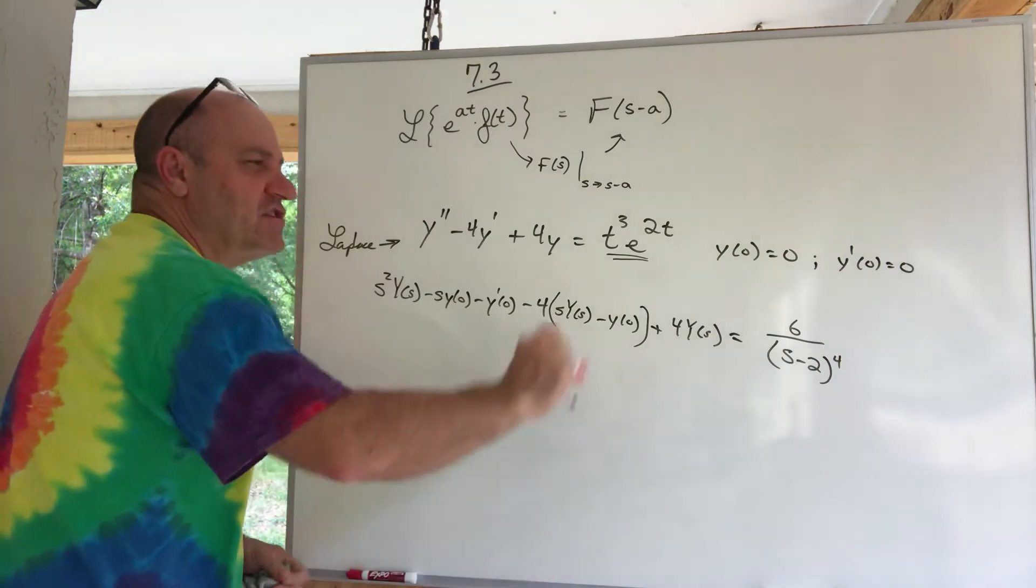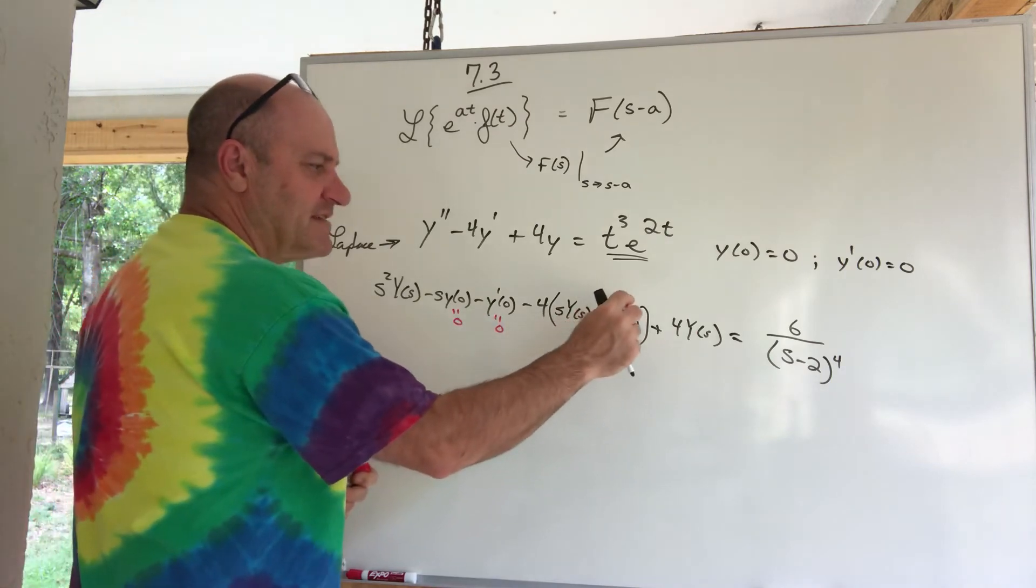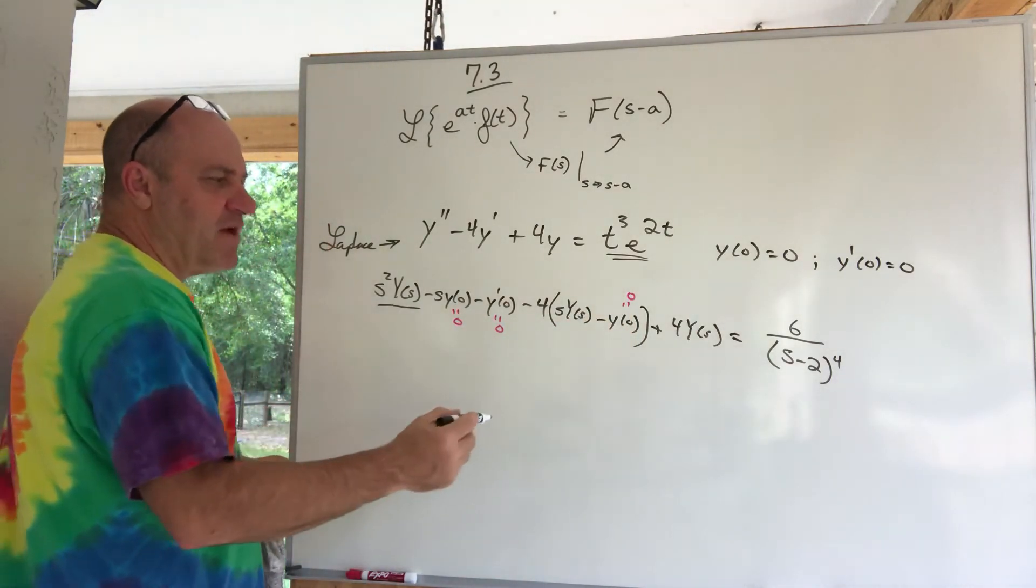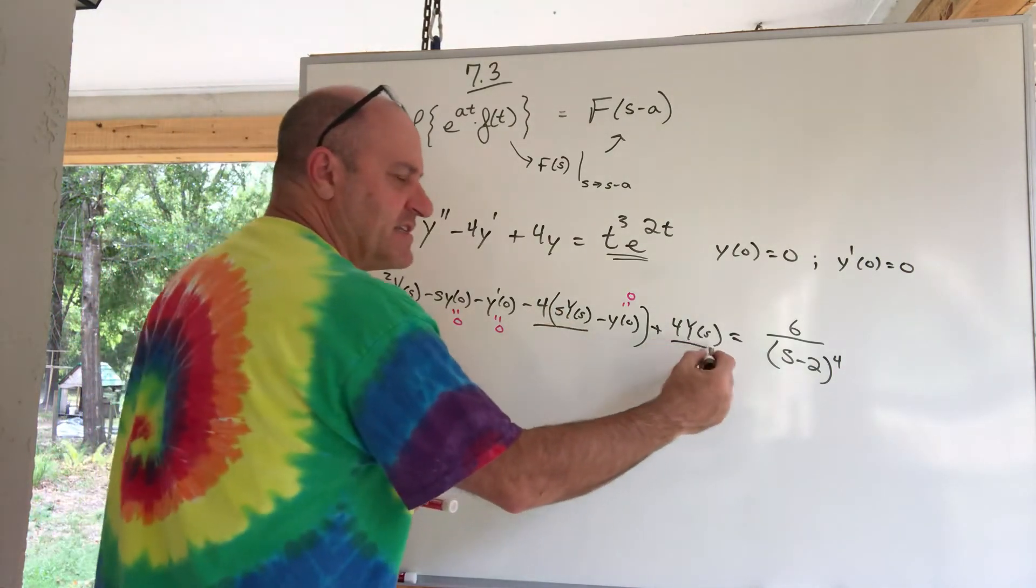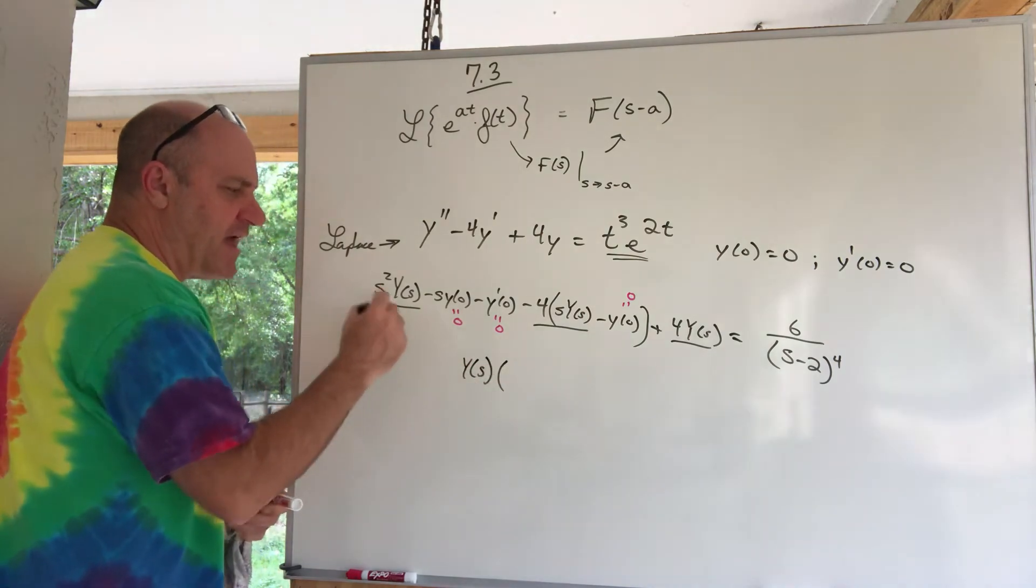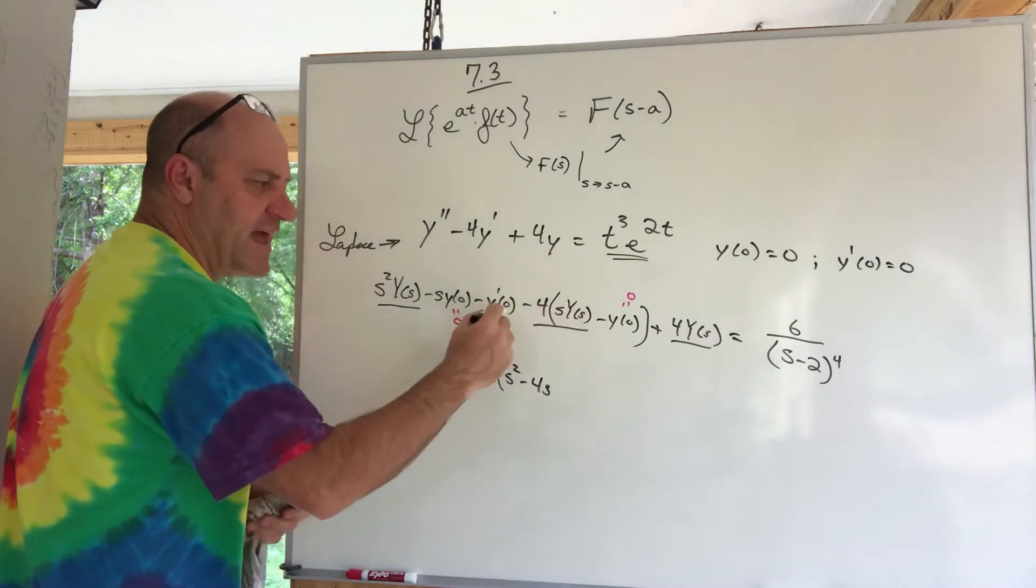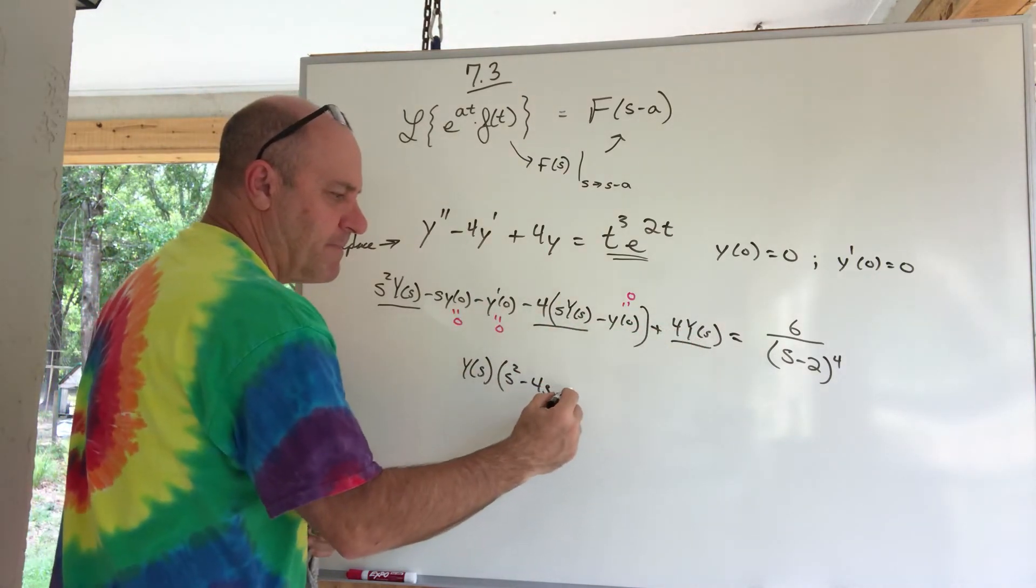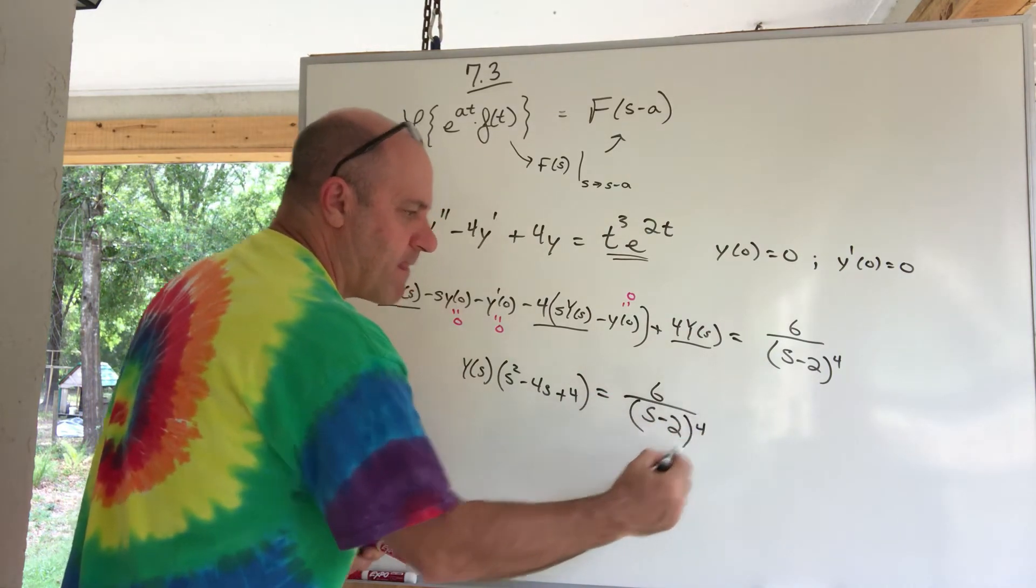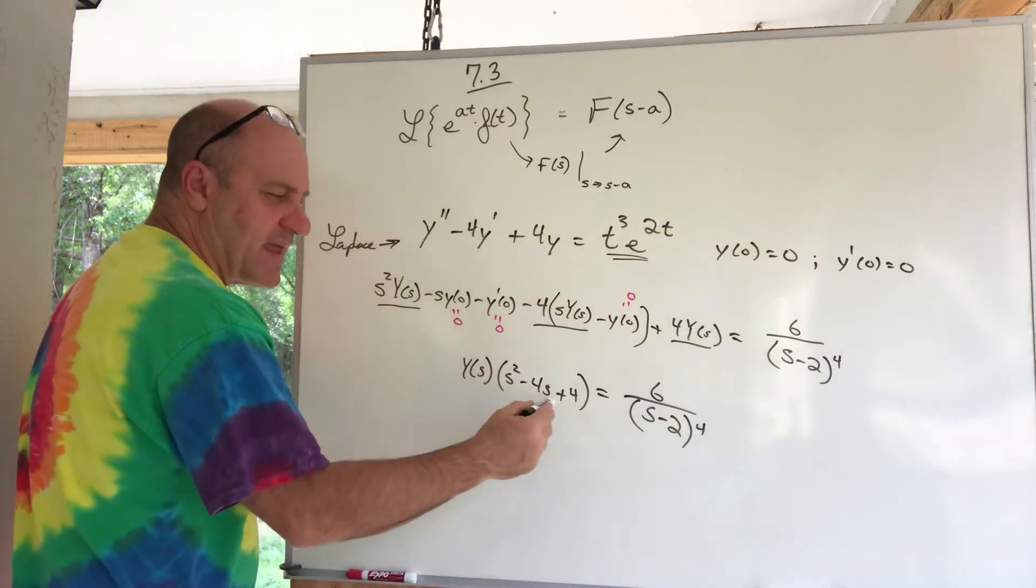All right, that's how you do it. You take the Laplace of everybody. All right, this is fun. These initial conditions are 0. That's a 0. That's a 0. That's a 0. What's left is this thing times big Y of s, this thing times big Y of s, this. And so what you do is you factor out the big Y of s, and it leaves you with s squared minus 4s and plus 4 equals this. You divide by this now, and the key is on this problem is you recognize what this is. This is s minus 2 squared. So when you divide by it, you get big Y of s is 6 over s minus 2 to the 6th.